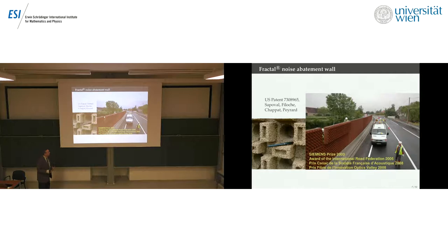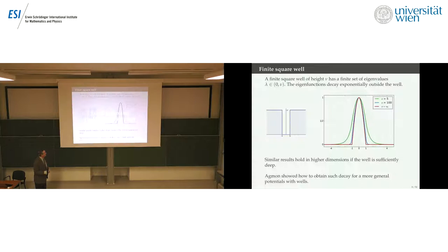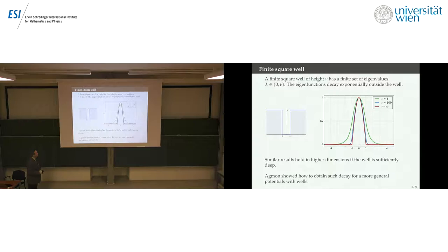Having introduced the Schrödinger equation and localization, let me now introduce the landscape function. Before doing that, let me mention an exercise from quantum mechanics 101: a very simple example of localization. So there's no disorder here, just interesting geometry — a single square well.